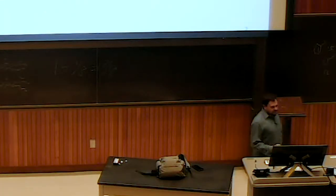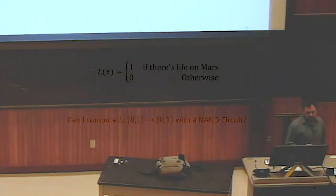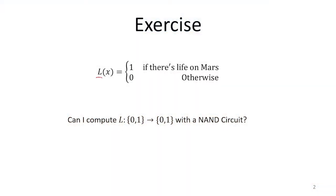So let's say that I have this function that I'm going to call L. And L takes in one bit as input, and it's going to give one bit as output. And the way that L behaves is it's going to return one if there's life on Mars, and it is going to return zero otherwise.